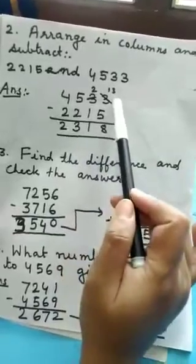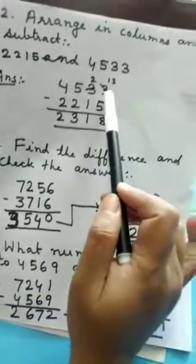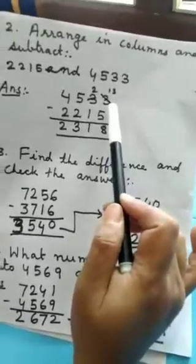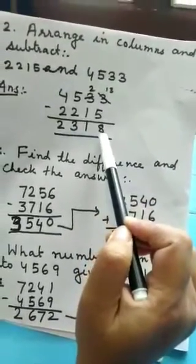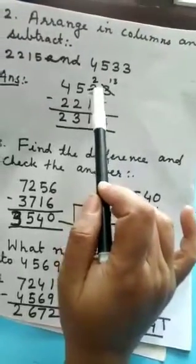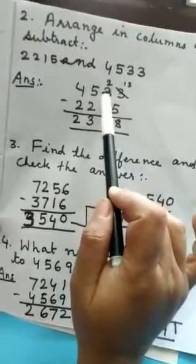Now, 3 will go with 5 children? No. Because 3 is smaller than 5. So, 3 will take as 13. 13 minus 5, 8. Now, we have borrowed one number from here. So, 3 will become your 2.